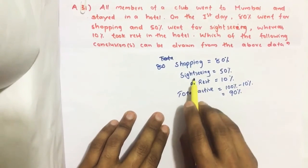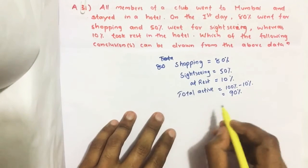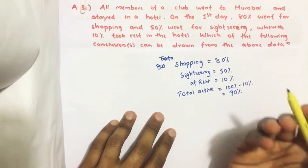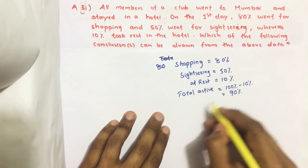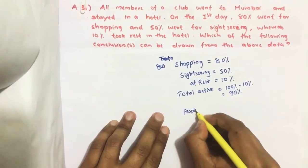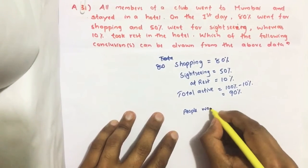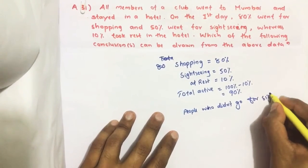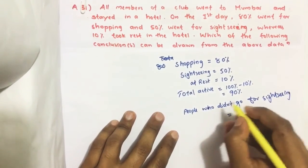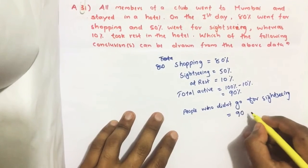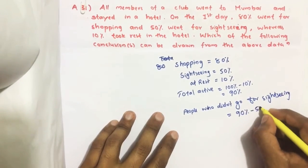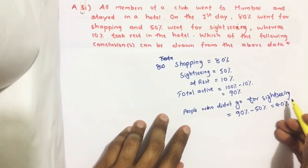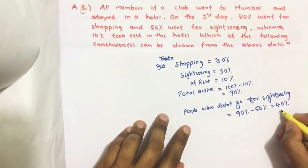what percentage went for sightseeing? 50%. So the percentage of people who did not go for sightseeing equals 90% minus 50%, which equals 40%. That means active people who didn't go for sightseeing = 40%.